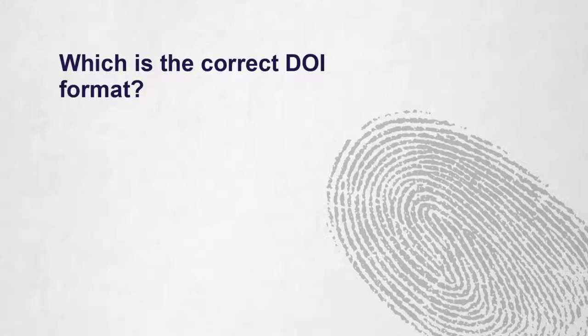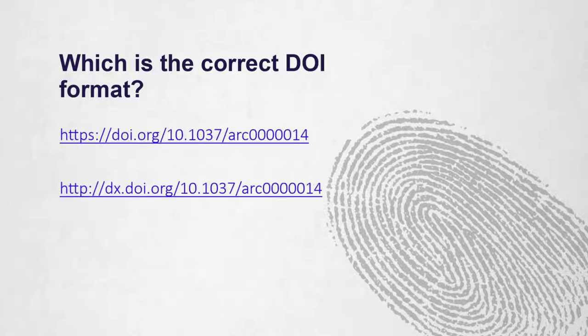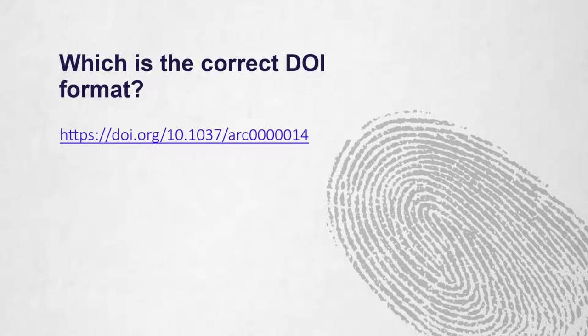You might find the DOI in different formats — it could look like this, or this, or this. APA referencing uses the DOI as shown in the first example.